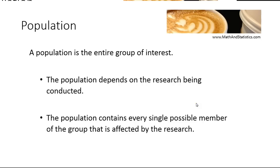Let's get started with the idea of what is a population. A population in statistics represents the entire group of interests — the entire group that you're going to be performing research on or collecting data from. The population depends 100% on the research being conducted and it always contains every single possible member of the group being affected by or part of the research.